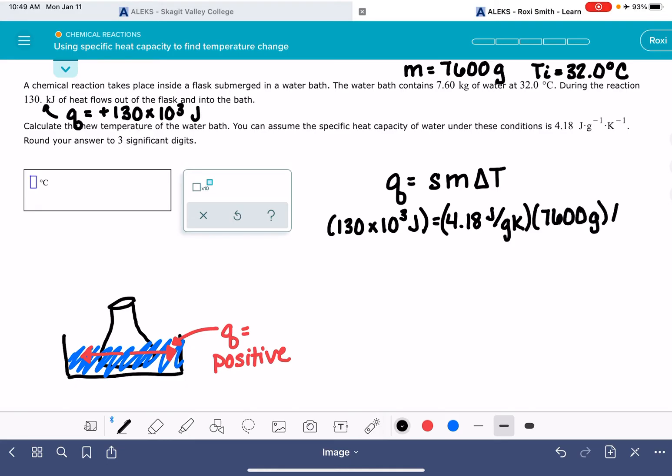And the delta T, we don't know, but we can solve for that in this problem. So let's go ahead and do the math so far. 130 times 10 to the 3 divided by 4.18 divided by 7600. This gives us a delta T of 4.09.